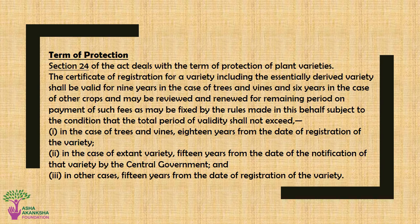Term of Protection: The certificate of registration for a variety, including the essentially derived variety, shall be valid for 9 years in case of trees and vines, and 6 years in case of other crops. They can be reviewed and renewed for the remaining period on payment of prescribed fees, subject to the total period not exceeding: (1) 18 years from the date of registration for trees and vines, (2) 15 years from the date of notification for extant varieties, and (3) 15 years from the date of registration in other cases.